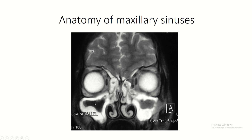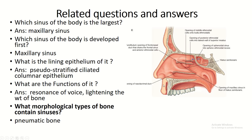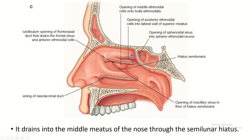The maxillary air sinus lies just below the orbital cavity. It is the largest sinus of the body and also the first to develop. It is lined by pseudostratified ciliated columnar epithelium. It drains into the middle meatus of the nose through the semilunar hiatus. The hiatus of the maxilla is reduced by the uncinate process of the ethmoid bone, the inferior nasal concha, and the palatine bone.